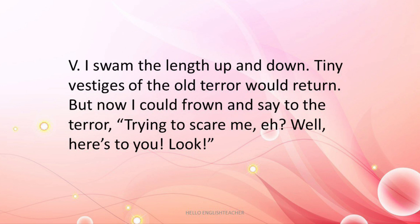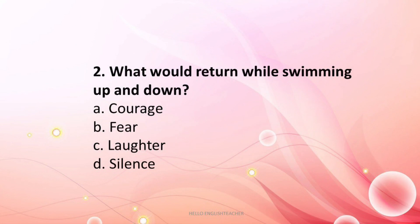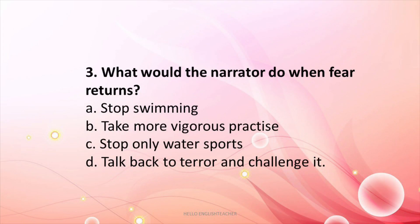Paragraph 5: 'I swam the length up and down. Tiny vestiges of the old terror would return. But now I could frown and say to the terror, trying to scare me, eh? Well, here's to you.' Question 1: Why did he swim up and down the pool? The answer is B — to check if the fear still exists. Question 2: What would return while swimming up and down? The answer is B — fear would return while swimming up and down in the pool.